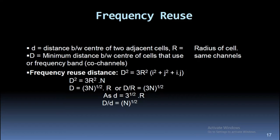Let d equal the distance between the centers of two adjacent cells and r equal the radius of a cell. The minimum distance between centers of cells that use the same channels or frequency band (co-channels) is the frequency reuse distance. The formula is: d² = 3r²(i² + j² + i·j) = 3r²·n, therefore d = √(3n)·r, or equivalently d/r = √(3n).